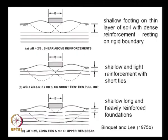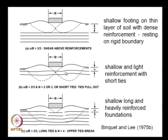The second mode of failure involves tie pullout. This happens when reinforcement layers are provided at shallow depth where u/b is less than 2/3, with short ties and a moderate number of reinforcement layers, say about 2 to 3.